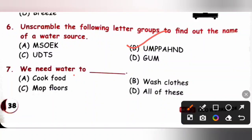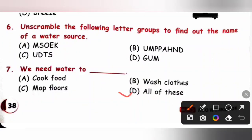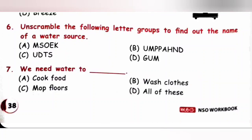Question 7: We need water to — A cook food, B wash clothes, C mop floors, D all of these. We need water for all of these activities. Option D is the correct answer.